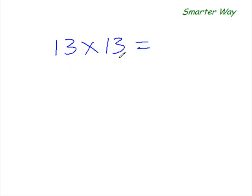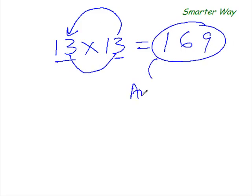Okay, so first thing you did was to add this 3 to this entire number. 13 plus 3 is 16 and 3 times 3 is 9, so the answer is 169. Isn't that simple?